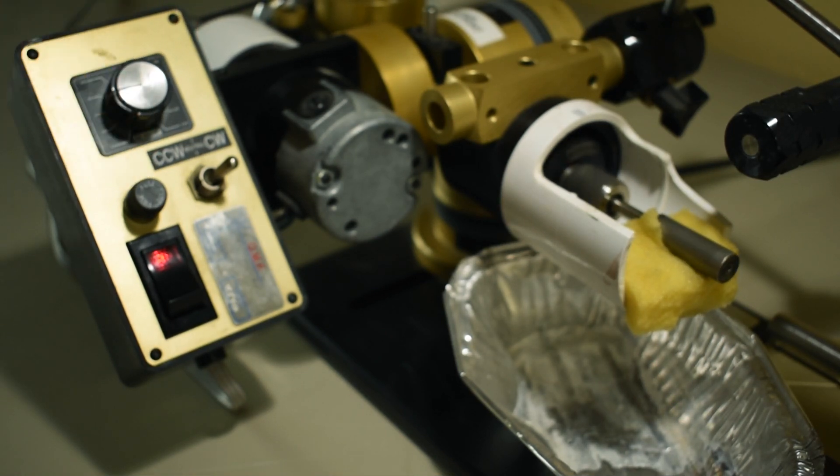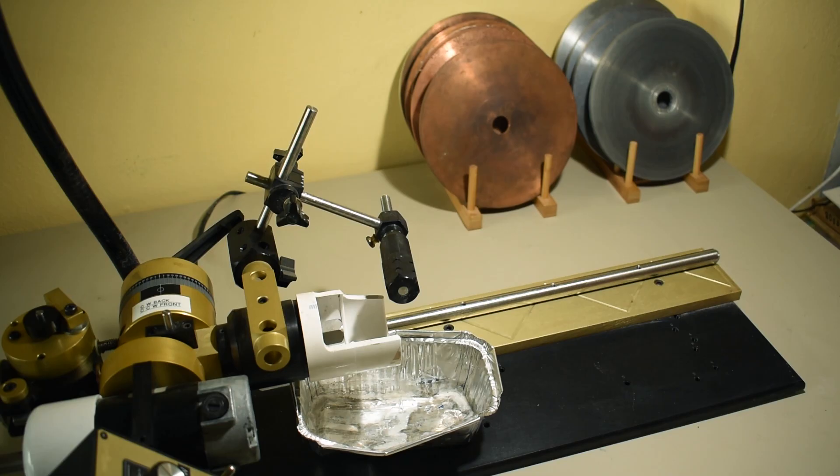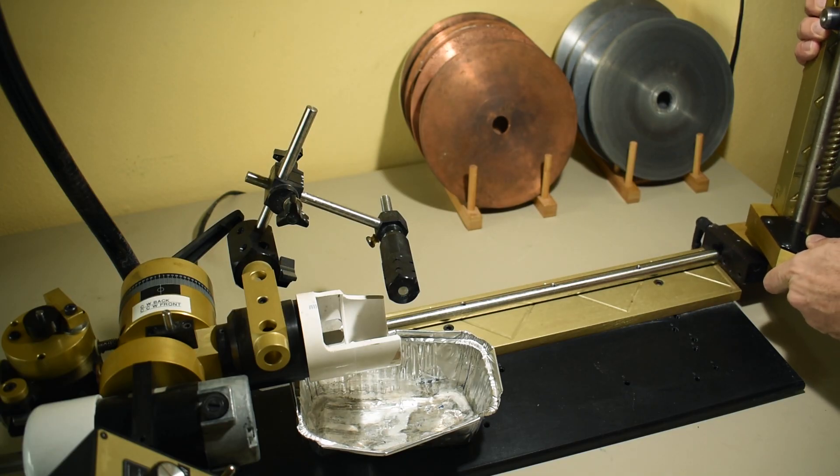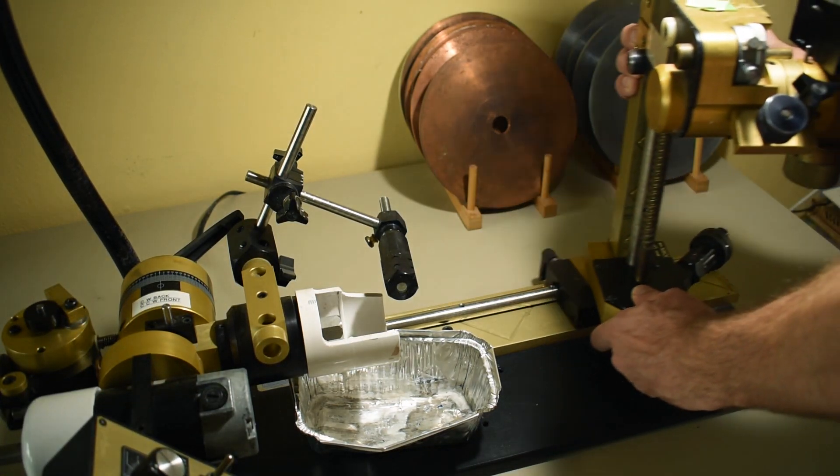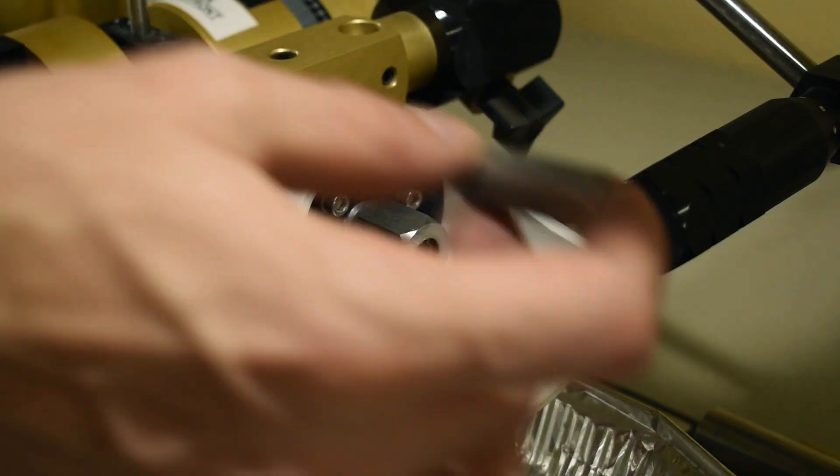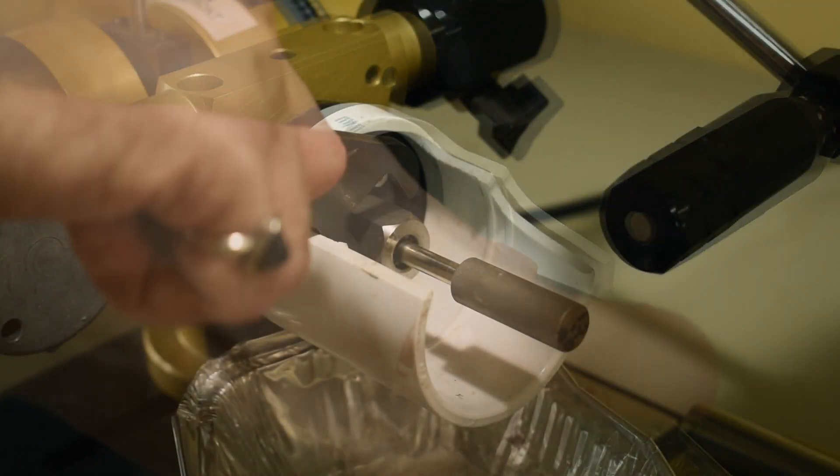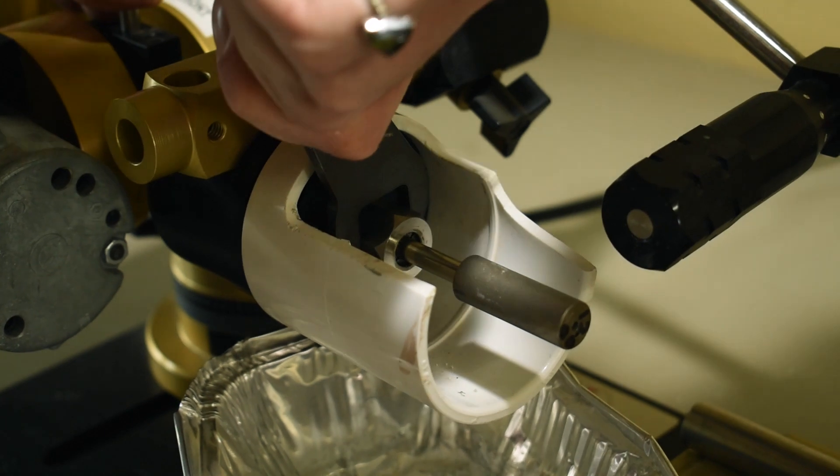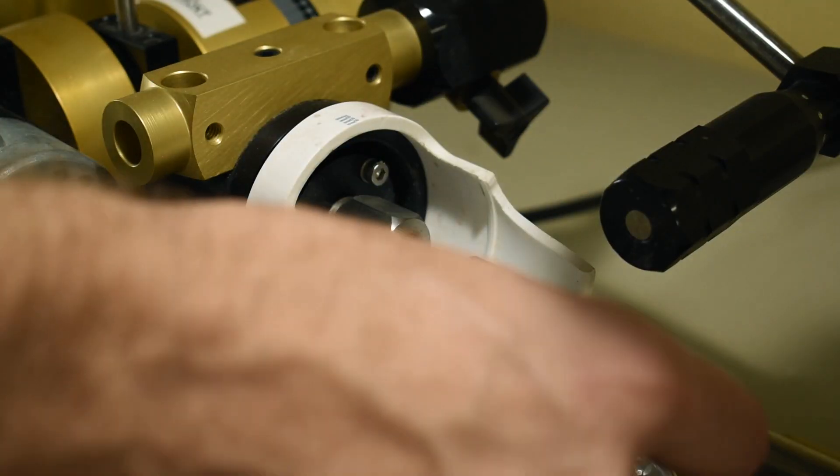To use this machine you must first attach a mast from your flat faceting machine. Here I'm using a polymetric scintillator mast but with a slide plate adapter you can use this machine with an Ultratech, Facetron, Graves and many other mast style faceting machines.